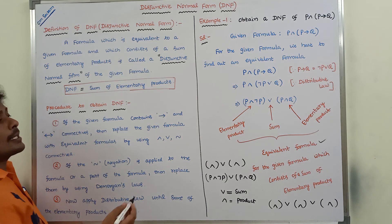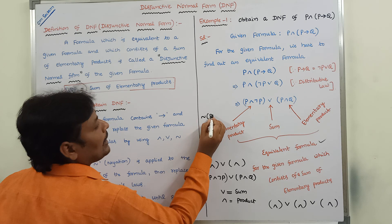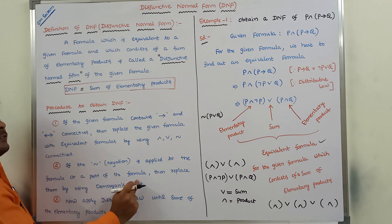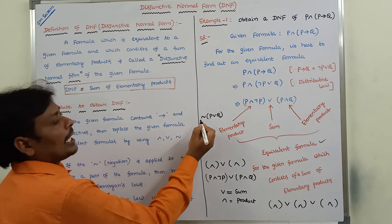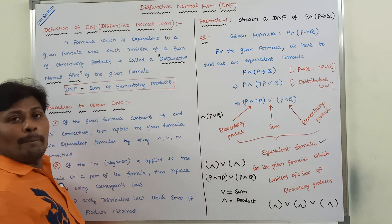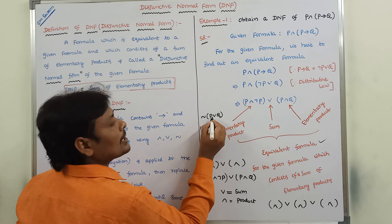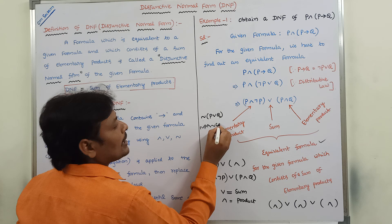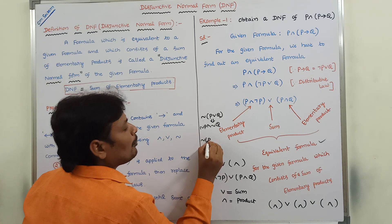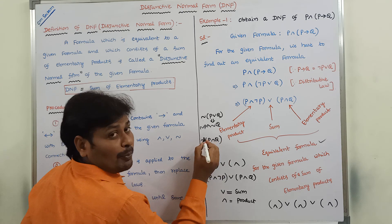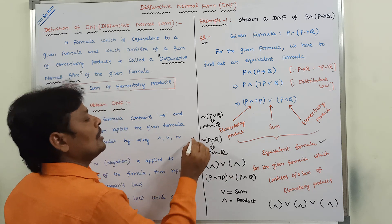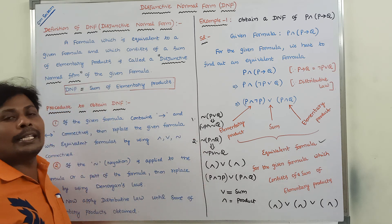There are two De Morgan's laws. For example, ¬(P ∨ Q) — negation can be applied to every component within the parenthesis: ¬P ∧ ¬Q. Similarly, ¬(P ∧ Q) gives ¬P ∨ ¬Q. So whenever negation is common for the entire product or sum, that negation can be applied to every variable or connective within the parenthesis using De Morgan's laws.